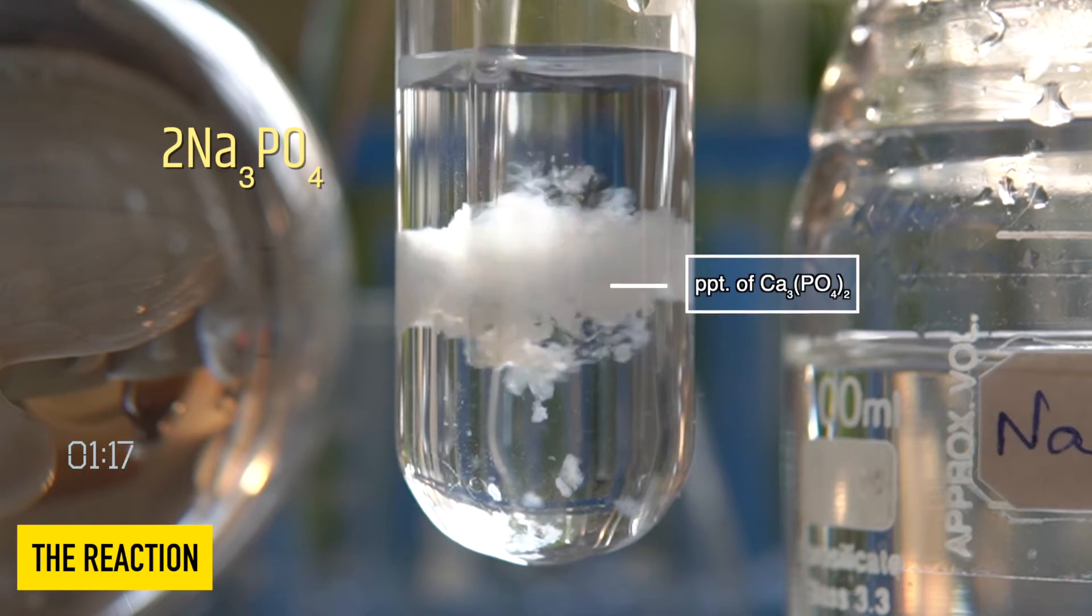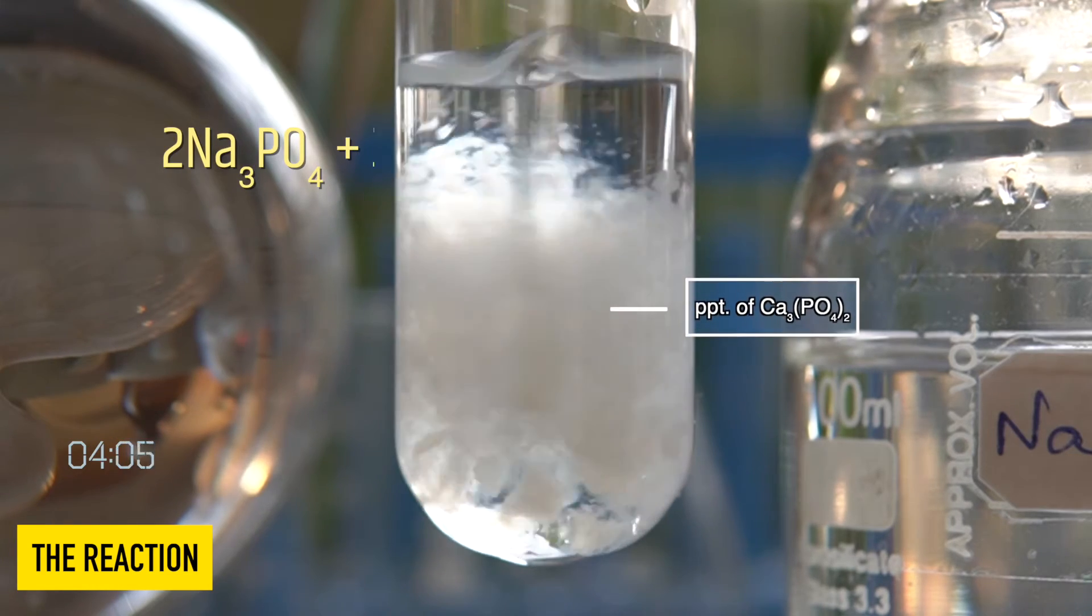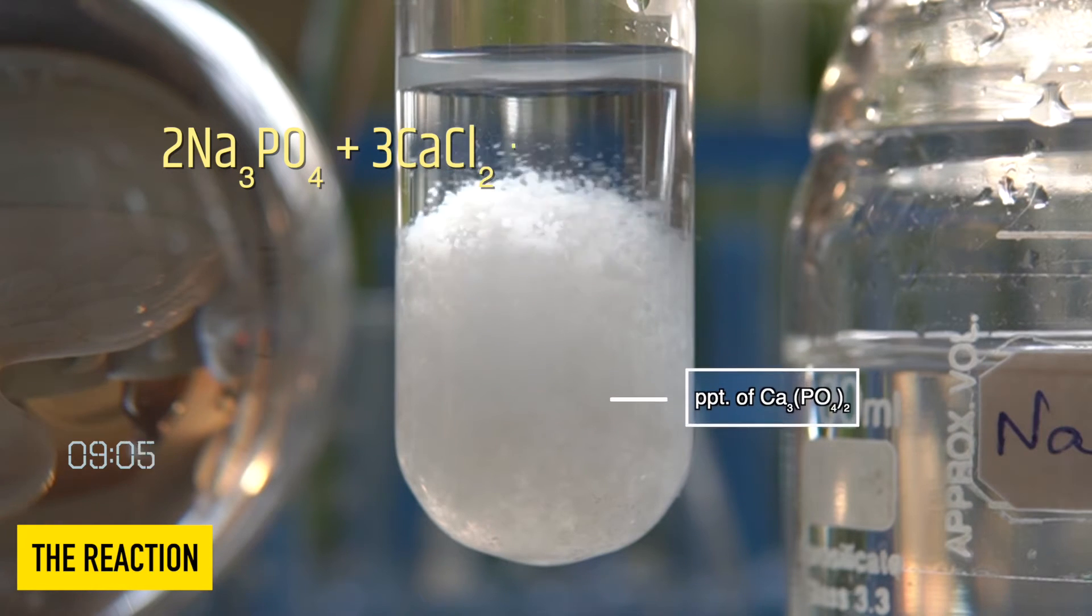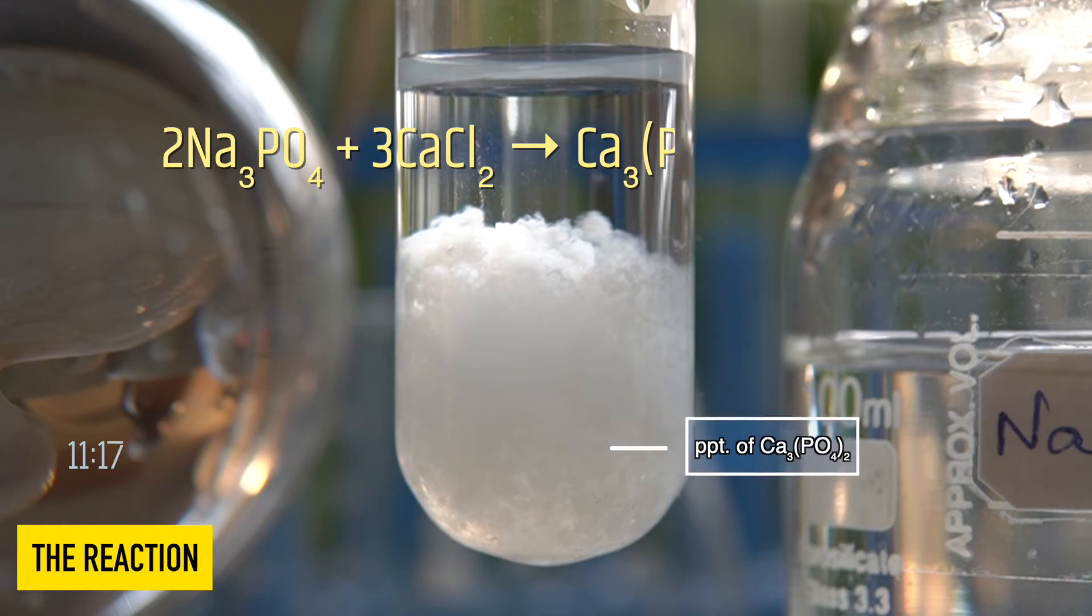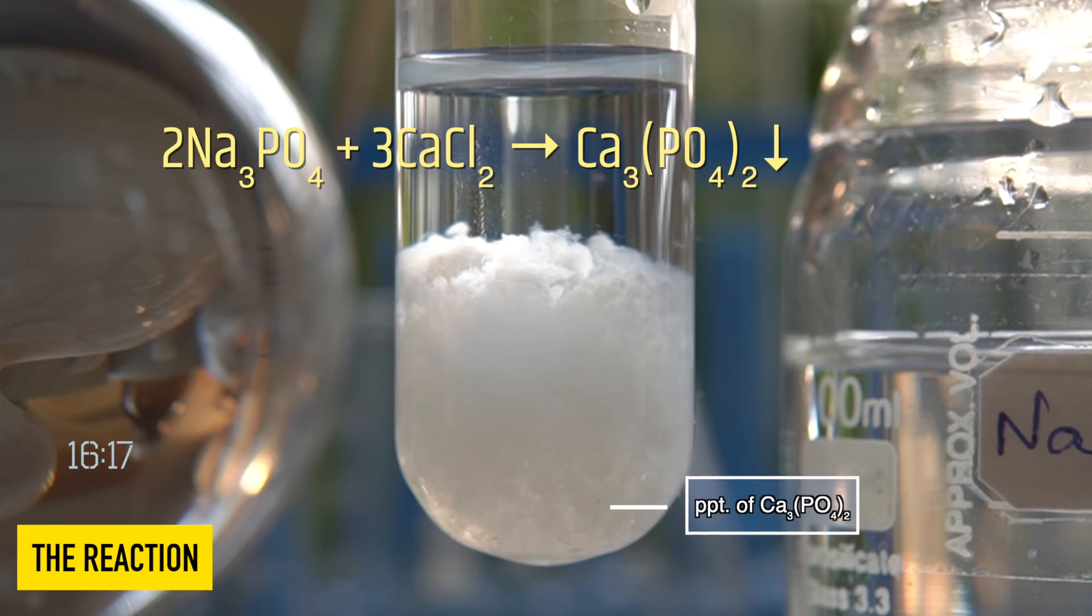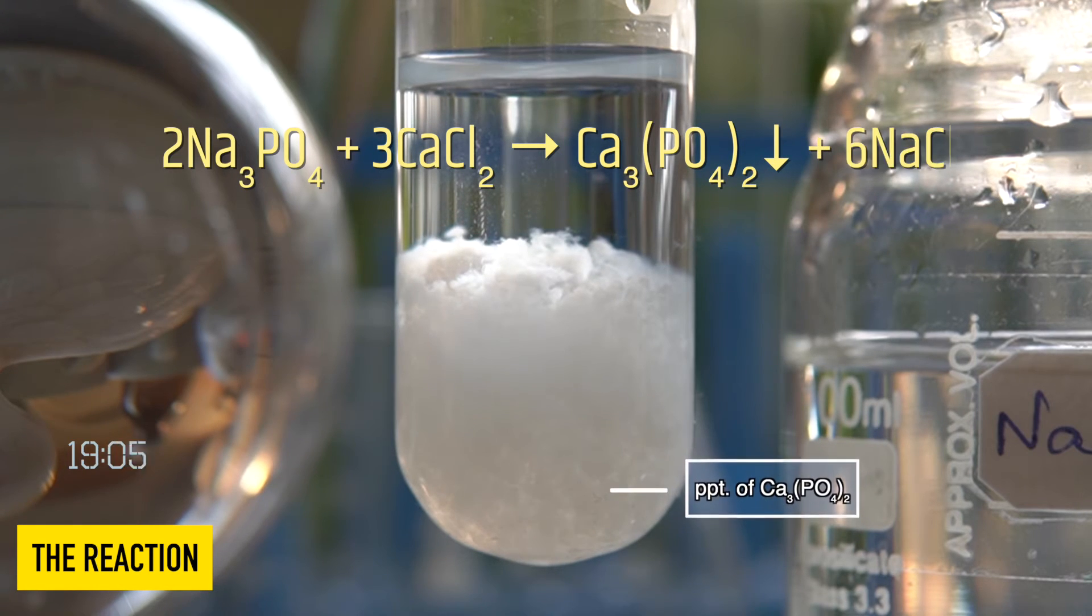So in this reaction aqueous solution of sodium phosphate reacts with aqueous solution of calcium chloride, producing an insoluble white PPT of calcium phosphate along with sodium chloride.